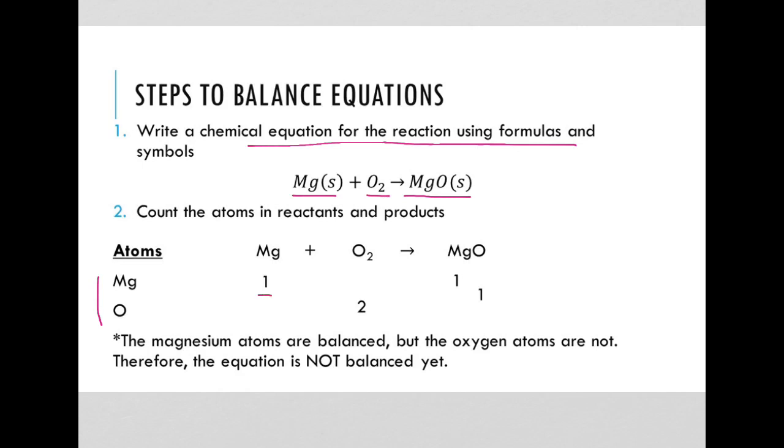On the left side of the equation, I have one magnesium, and on the right I have one magnesium. On the left, I have two oxygens and only one oxygen on the right here. Therefore, the magnesium atoms are balanced, but the oxygen atoms are not. And so the equation is not balanced yet.